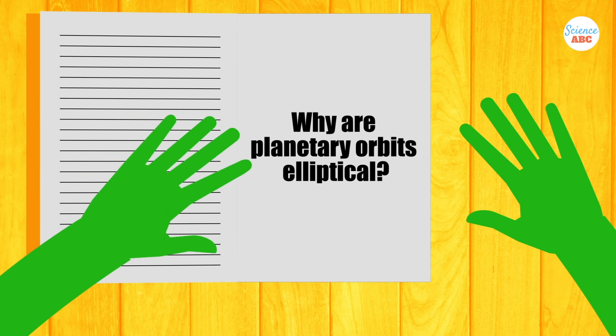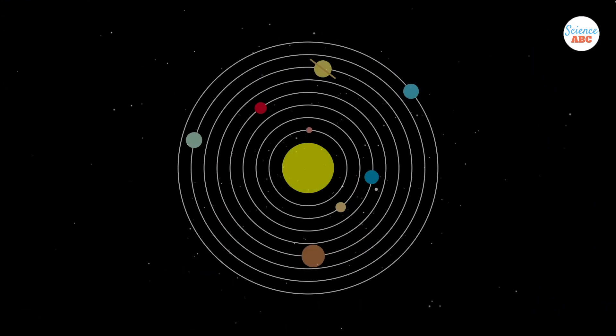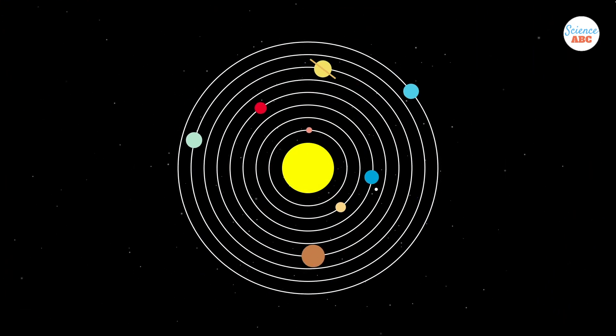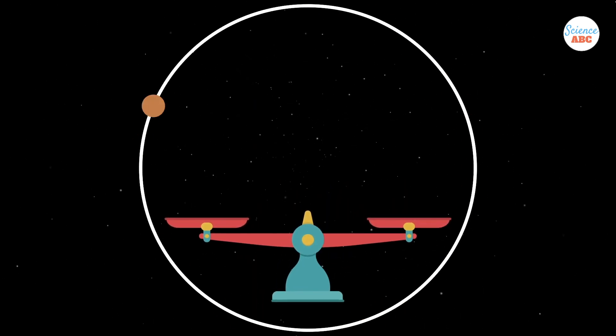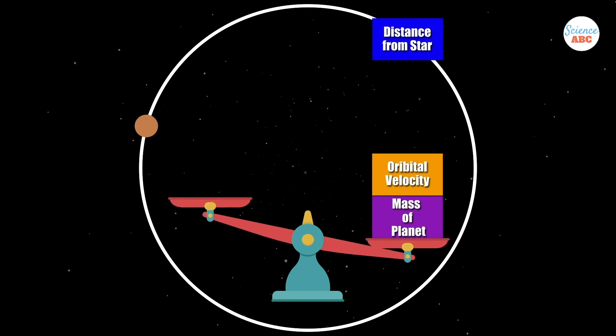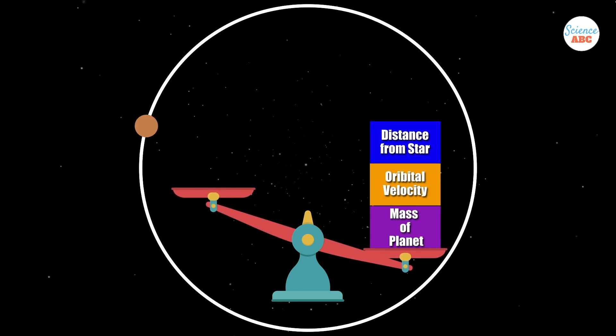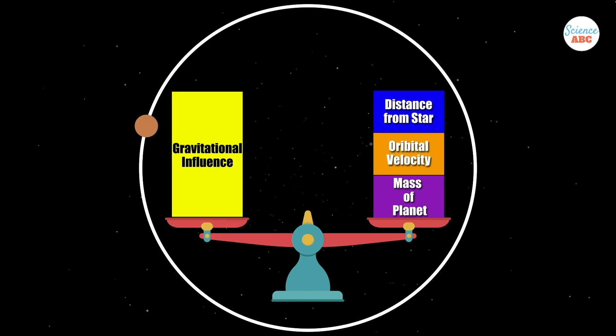But why elliptical? Well, in an ideal universe, all orbits would have been circular. In fact, some orbits are perfectly circular, but those instances are very few and far between. For a perfectly circular orbit, the orbiting planet would need to have mass, velocity, and distance from the star that precisely matches the gravitational influence of that star.